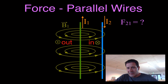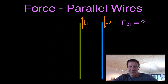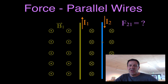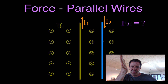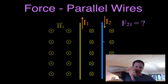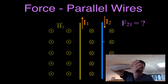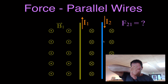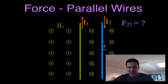Wire two is completely surrounded by a magnetic field that is moving into the screen — that's the magnetic field from wire number one. Wire two has a current in it and it is in a magnetic field, so this wire is going to feel a force. We can determine the direction of that force using the right-hand rule: point your thumb in the direction of the current, point your fingers into the screen in the direction of the magnetic field, and your palm points to the right. So the force on wire two is to the right.